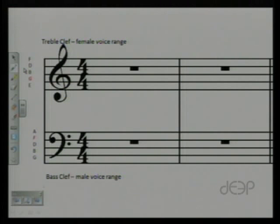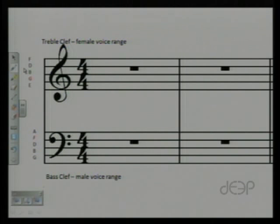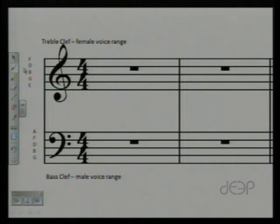A staff consists of five horizontal lines with four spaces between those lines, and you can see that staff on the screen in front of you. The treble clef, the one on top, is used to indicate pitches that are high in pitch — another way to think of it is pitches in the female range of voice. The bass clef, the one on the bottom, is used to indicate pitches found more in the male voice range, so think lower pitches.